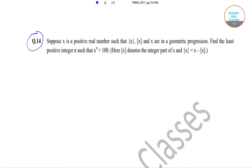Hello, today we will be solving question number 14 from the Priyadi Mo 2017 question paper. In this question, it has been said that suppose x is a positive real number such that fractional part of x, greatest integer of x, and x are in geometric progression. We need to find out the least positive integer n such that x to the power n is greater than 100.